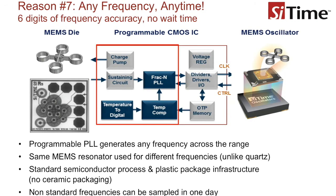Reason number seven: MEMS oscillators are readily available in any frequency. Quartz suppliers are susceptible to longer lead times due to package constraints and the time it takes to cut the crystals. In contrast, the output frequency of MEMS oscillators is generated simply by programming the phase lock loop to different multiplication values, enabling a very wide frequency range with six digits of accuracy. Samples can be available as early as one day, with standard lead time on factory programmed parts being four to six weeks.